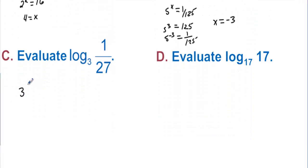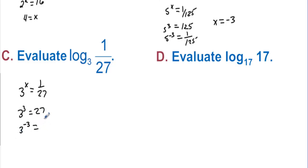3 to some number equals 1 over 27. Well, 3 to the 3rd is 27, so 3 to the negative 3rd equals 1 over 27. So in this case, this thing evaluates to negative 3.